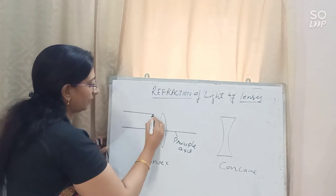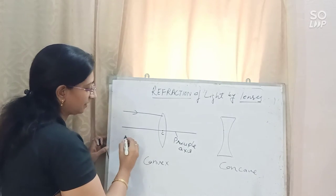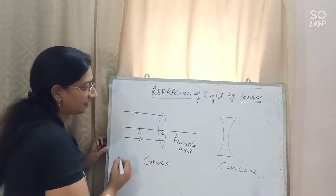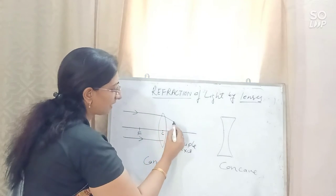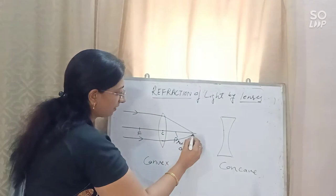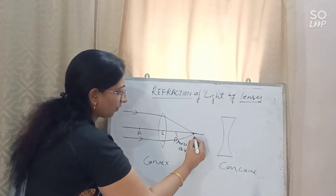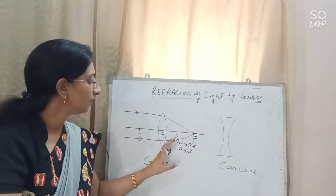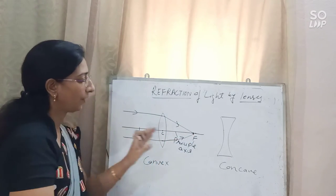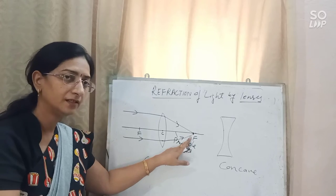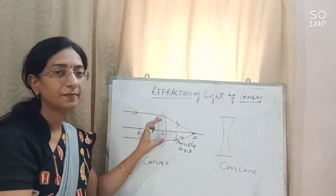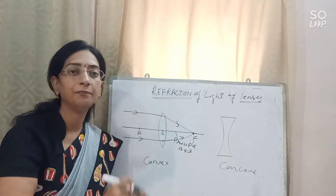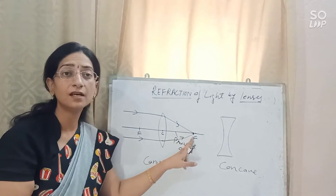When a ray of light travels parallel to the principal axis and passes through the convex lens, these parallel rays meet at a focus point on the other side. All the rays converge at one point — that point is known as the focus point.